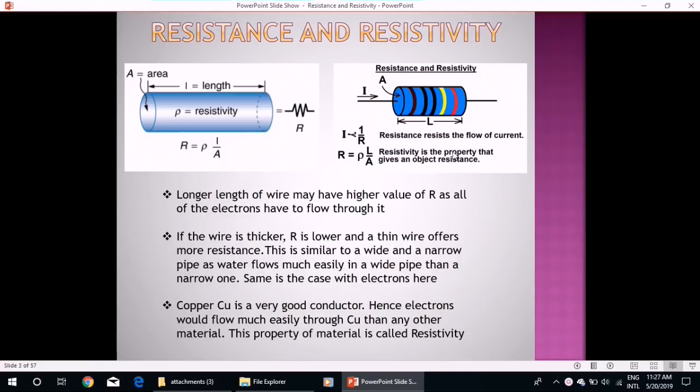Resistivity is the property that gives an object resistance, and both are related with this expression: R is equal to rho L over A. It can be seen that longer length of wire may have higher values of R as all of the electrons have to flow through it.